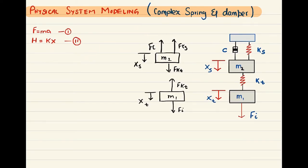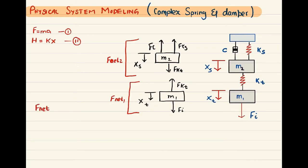We have two masses M1 and M2, so we'll have two net forces. The net force on M1 is Fn1, and Fn1 equals Fi minus FkT — equation number three. Fi is going downward and FkT is going upward, so since the reactive force is in the opposite direction, we subtract it from the input force.